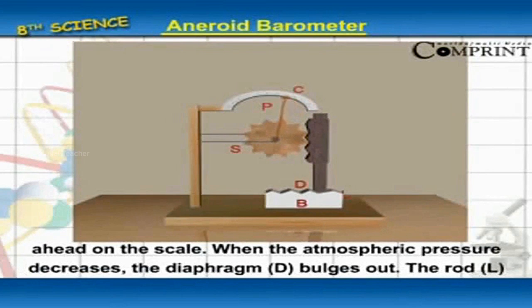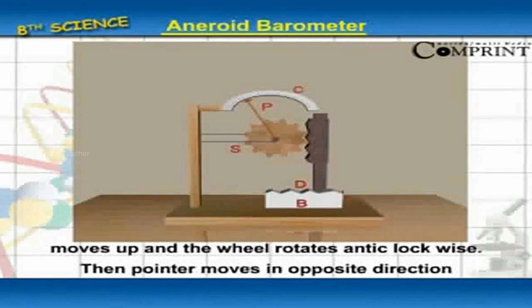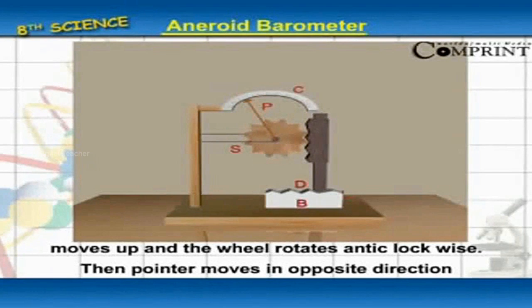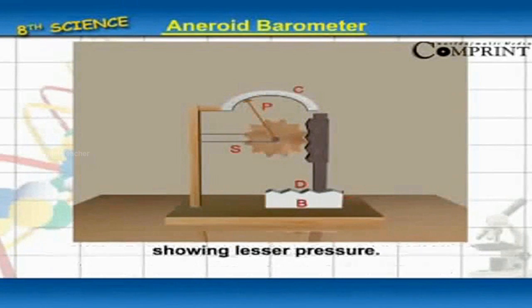When the atmospheric pressure decreases, the diaphragm D bulges out. The rod L moves up and the wheel rotates anticlockwise. Then the pointer moves in opposite direction showing lesser points.